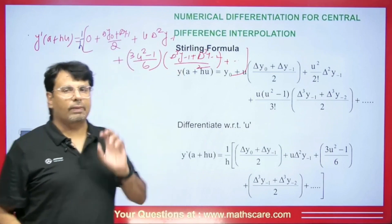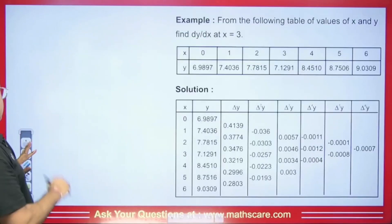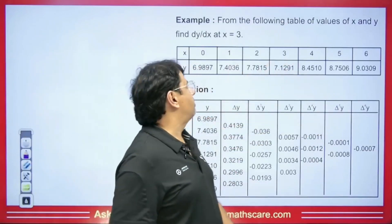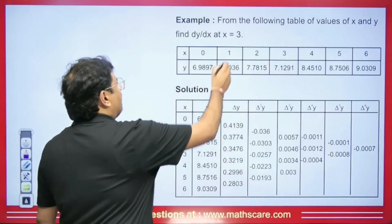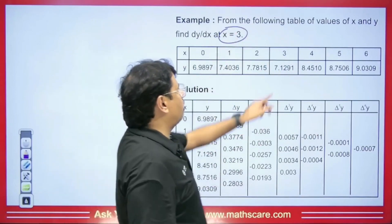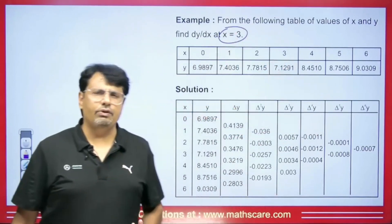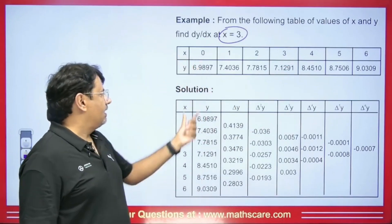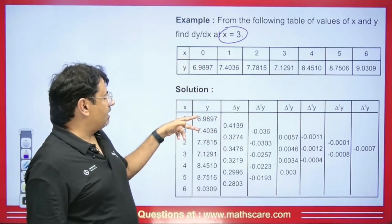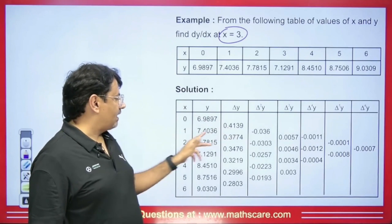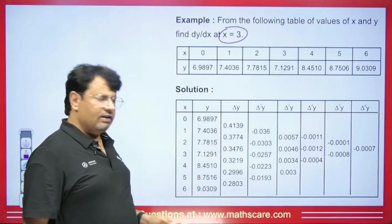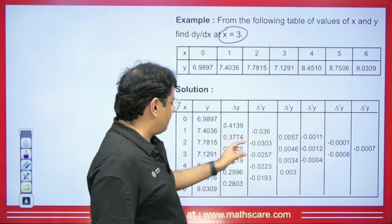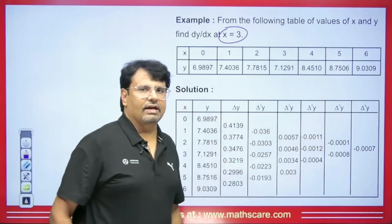Now how do we apply this to a question? We have a question: given X and Y values, find the derivative at X = 3. We need to find that value. We will make a difference table with columns for X, Y, and successive differences ΔY, Δ²Y, Δ³Y, Δ⁴Y. We calculate and write the differences to build the full table.